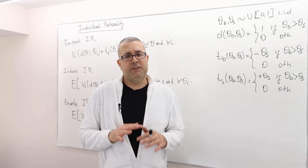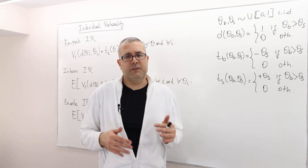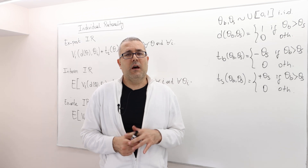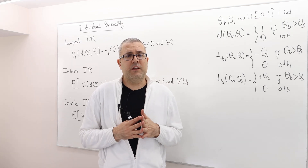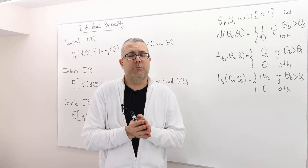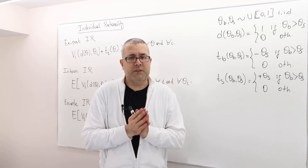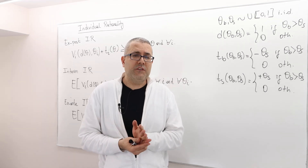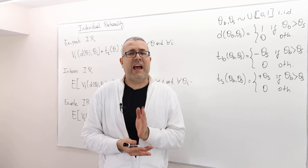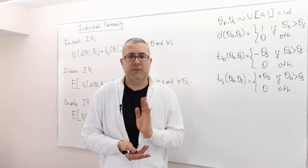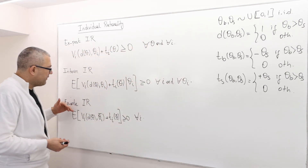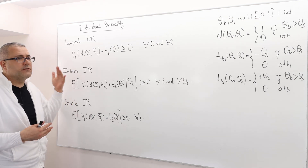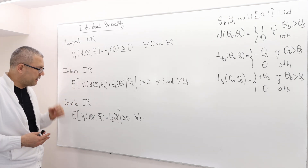Individual rationality takes different forms in Bayesian mechanism design settings. Remember, individual rationality is basically about whether participants would like to participate in the mechanism or not. But the question is: when do we ask this question to the participants? We have three concepts, or three different versions, of individual rationality.